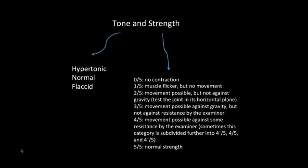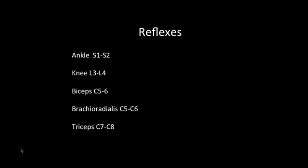After checking tone and strength, we also check the bulk of the muscle and then move on to check the reflexes — ankle, knee, biceps, brachioradialis, and triceps, listed from bottom to top. S1 and S2 correspond to the ankle; L3 and L4 correspond to the knee; C5 and C6 correspond to biceps and brachioradialis; and C7 and C8 correspond to triceps.